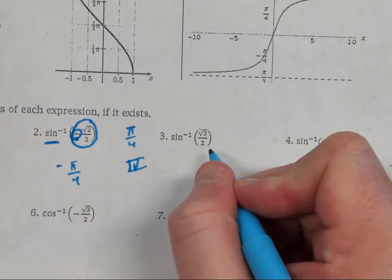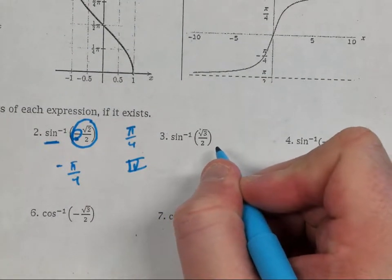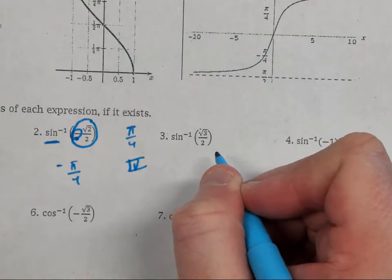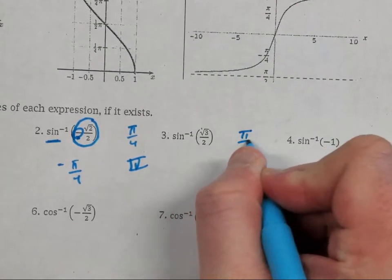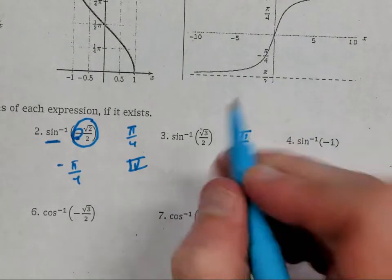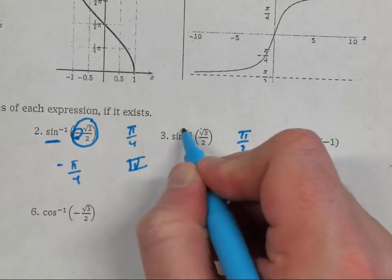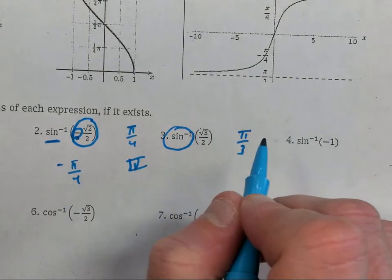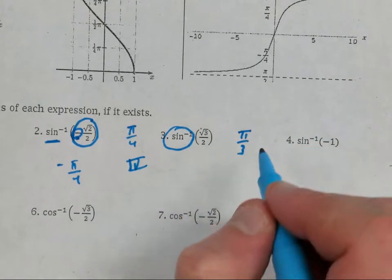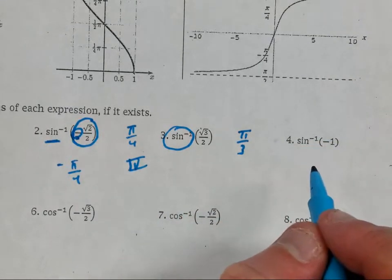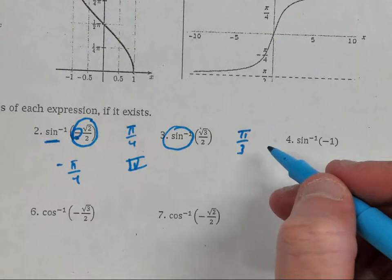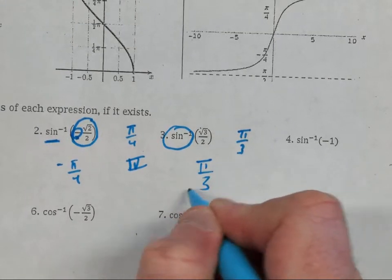Arc sine of square root of three over two. That means your y-value is square root of three over two. Are you dealing with pi over six or pi over three? Pi over three — very good. This sine value is positive. Arc sine comes out of quadrants one or four. It's positive, so it's quadrant one. The pi-over-three family member in quadrant one is pi over three — that's your answer.